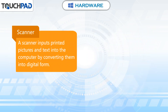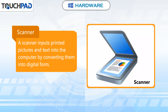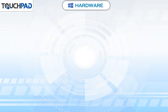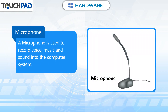Scanner. A scanner inputs printed pictures and text into the computer by converting them into digital form. Microphone. A microphone is used to record voice,